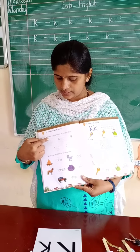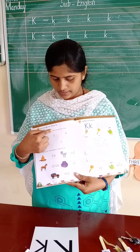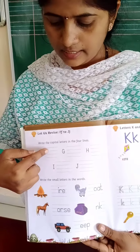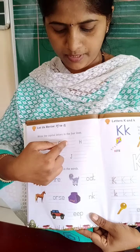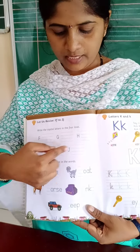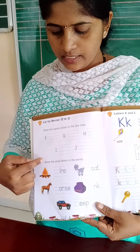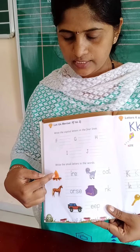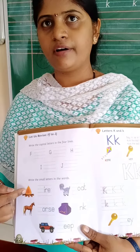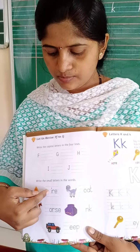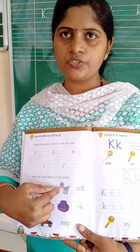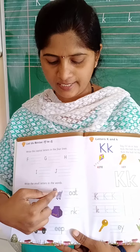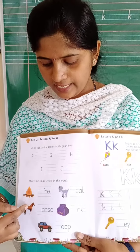Write the capital letters in the four lines. Write the capital letters in the four lines — capital F, capital G, capital H, capital I, capital J. Next, go read the instruction: write the small letters in the words. Which picture is this? Yes — fire. Fire starts from which letter? F. So write here small F. Which picture is this? Goat. Goat starts from which letter? G. So write here small G. Here — H.